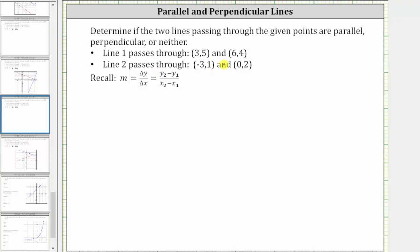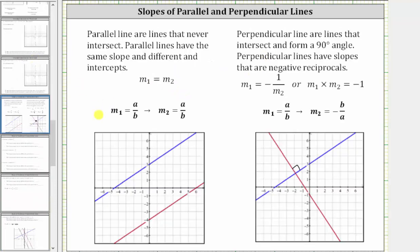To determine this, we'll first find the slopes of the lines passing through the given points using the slope formula. If the slopes are equal, the two lines are parallel. If the slopes are negative reciprocals of one another, the two lines are perpendicular. And if the slopes are not equal nor negative reciprocals, the answer is neither.